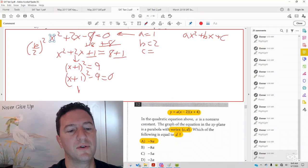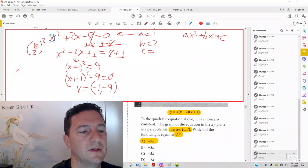And here you can tell that your vertex is negative 1, negative 9. How do you know? Well, if it's in the form of x minus h quantity squared plus k, hk, that's your vertex.